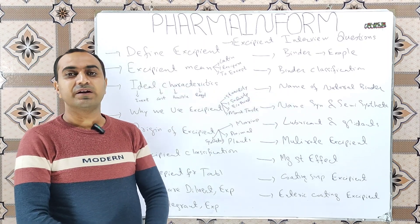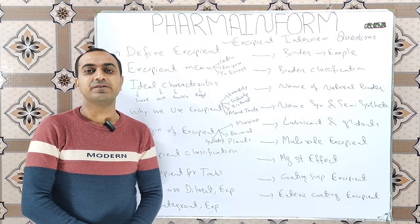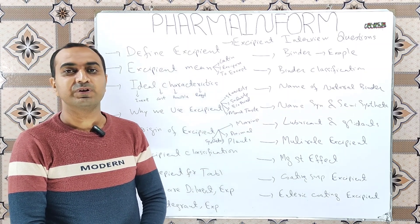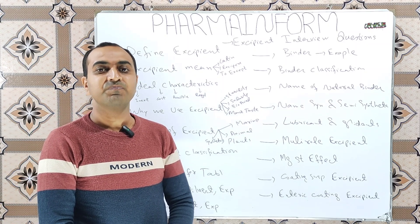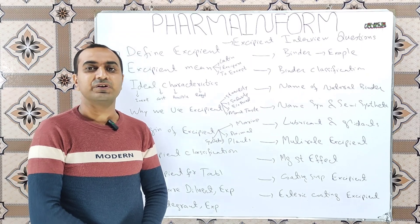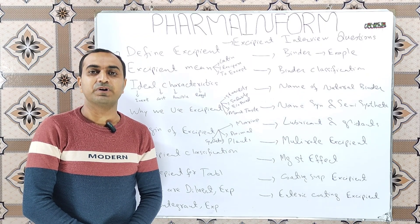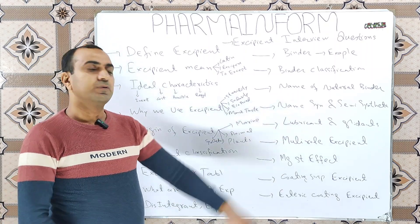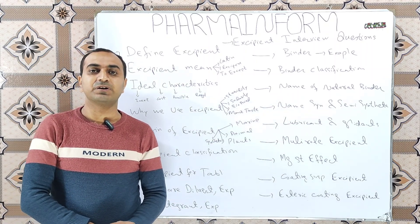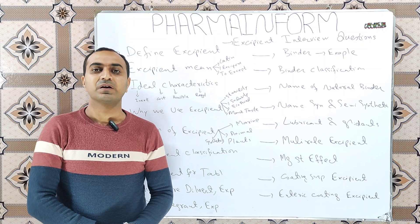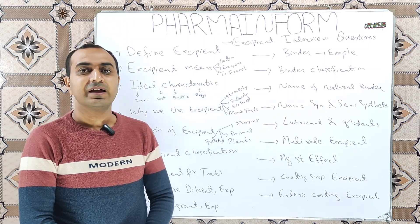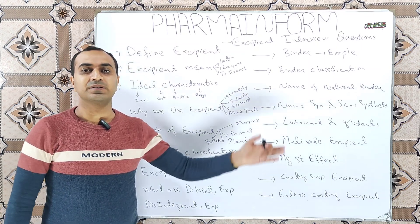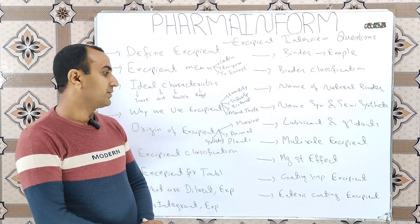The next question is: what are lubricants and glidants? Glidants are excipients used to reduce the inter-particle friction and enhance the flow. Examples are talc and Aerosil. Lubricants are excipients added in solid dosage forms to prevent sticking. The most commonly used lubricant is magnesium stearate.